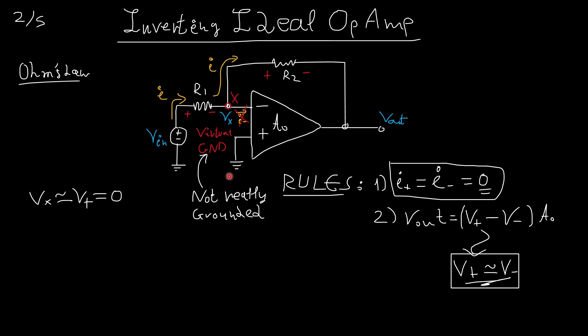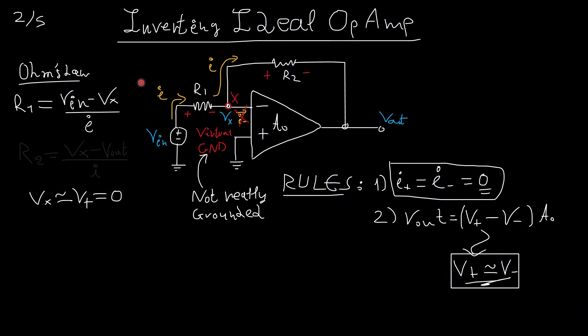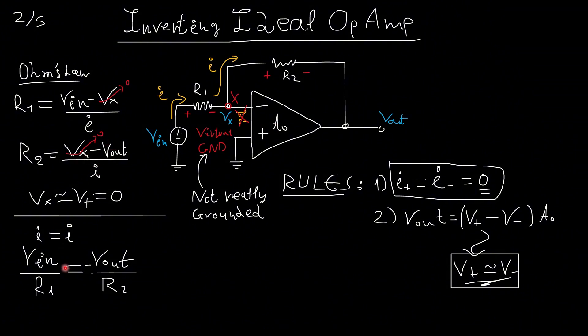What we are going to do is we are taking Ohm's law. At first, for R1, the voltage here must be Vin minus Vx over I, the common current. And the voltage here must be equal to Vx minus Vout over I. We know that Vx is zero, the virtual ground. And what we are going to do is we are going to say that this is the same current. Therefore, Vin over R1 must be equal to minus Vout over R2, which brings us to this little beautiful equation.